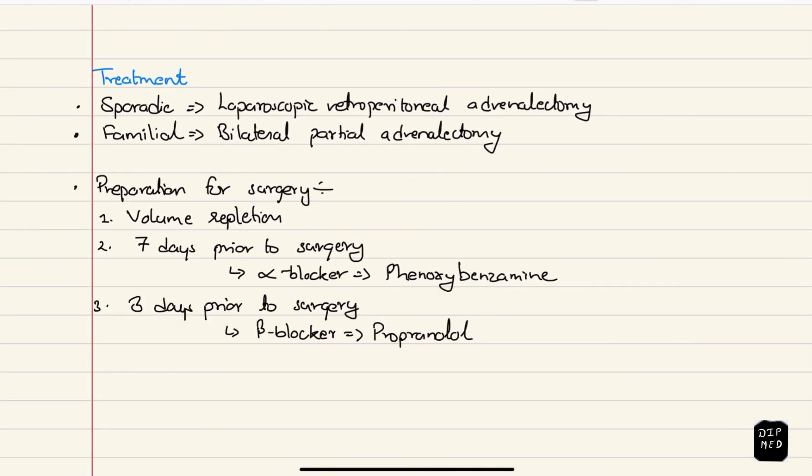Now finally in the treatment section. The definitive treatment is surgery. For sporadic cases, laparoscopic retroperitoneal adrenalectomy is preferred but for familial cases, bilateral partial adrenalectomy is done. There is high chances of patient getting exposed to very high amount of catecholamines during the surgery. So it is very important to prepare the patient. First, the intravascular volume repletion is done. Isotonic saline can be used for this. 7 days prior to surgery, irreversible non-selective alpha blocker is given. That is phenoxybenzamine. And 3 days prior to surgery, beta blocker propranolol is given.